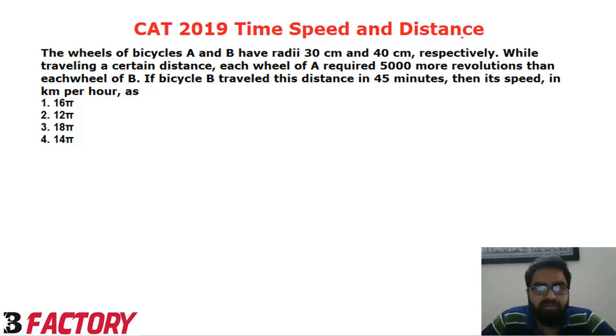We are asked if bicycle B travelled this distance in 45 minutes, which is the same time as A, and both of them cover the same distance, then what is its speed? So what we need to find is the number of revolutions by A or B, and then we have to find the distance travelled, which will be the same.